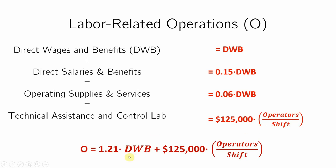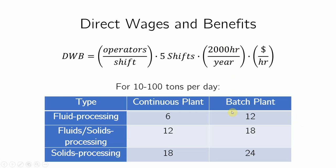How do we get DWB? We can approximate it using this relation: DWB equals the operators per shift, times 5 shifts, times 2,000 hours per year, times the hourly salary of the operator.